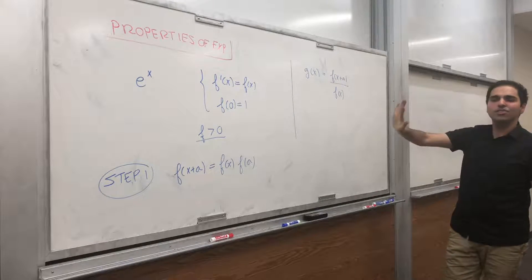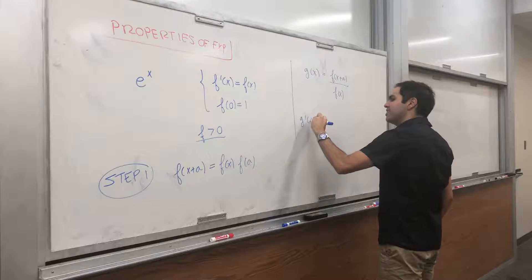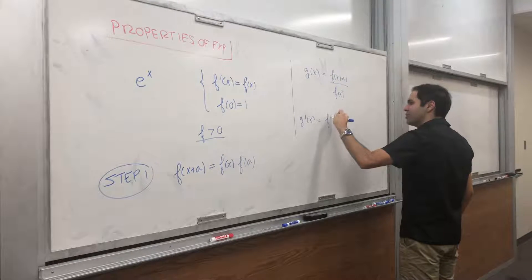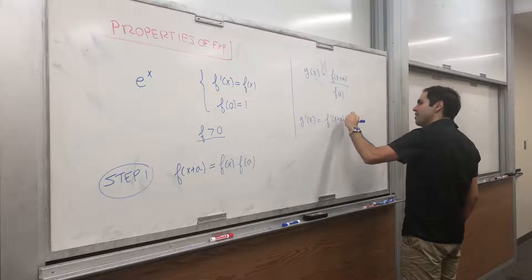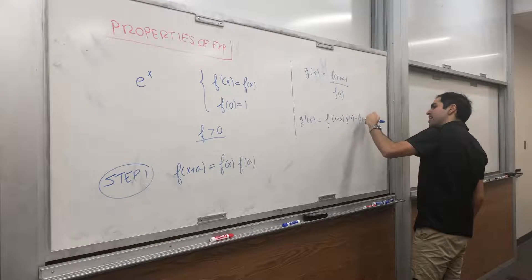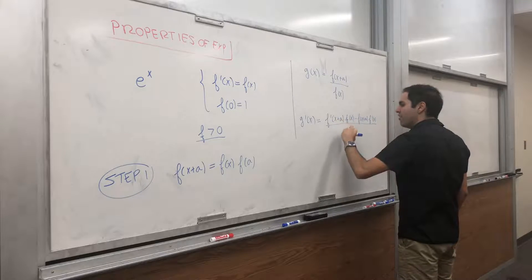And that's completely fine, since we assume f is positive. Then, let's differentiate this using the quotient rule. So that's equal to f prime of x plus a times f of x minus f of x plus a, f prime of x over f of x squared.